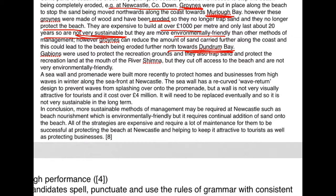'Gabions were used to protect the recreation grounds, and they can also trap sand and protect the recreation land at the mouth of the Kilkeel River.' That's our fact, figure, place. 'They cut off access to the beach and are not very environmentally friendly.' Next, 'a seawall and promenade were built to protect homes and businesses from high waves in winter along the seafront. The seawall has a curved wave return and prevents waves splashing over onto the promenade, but a wall is not attractive for tourists and it costs over £4 million' — positives and negatives. 'It will need to be replaced eventually, and so it's not very sustainable in the long term.'